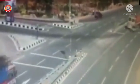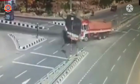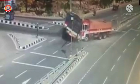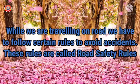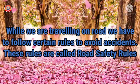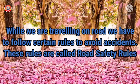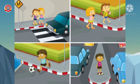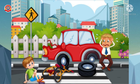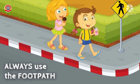Look at this video. Do you know what is happening here? Yes, an accident. Do you know how this accident happens? When we are traveling on the road, we have to follow certain rules to avoid road accidents. These rules are called road safety rules. If we do not follow these road safety rules while traveling on roads, accidents may occur. So let's see what the road safety rules are.